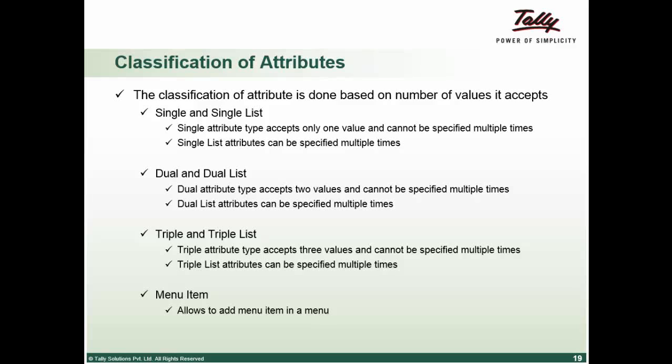A triple list type attribute accepts three values and can be specified multiple times. Example, switch, it's an attribute modifier and can be used across all the definition types. Switch colon the label of the case colon the definition name colon the condition. And this can be specified multiple times.